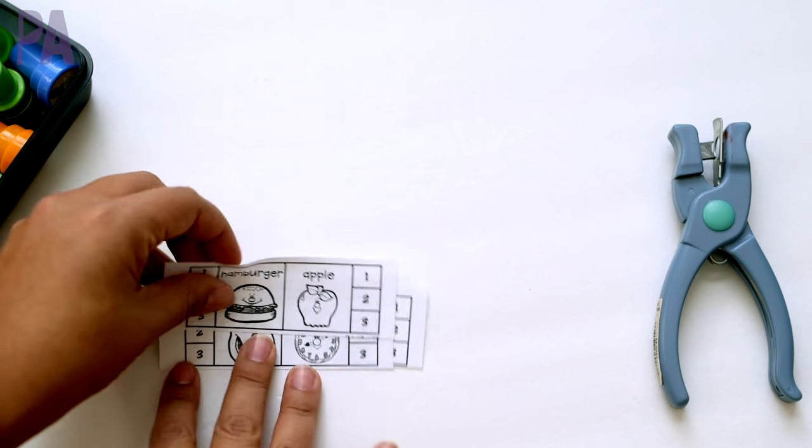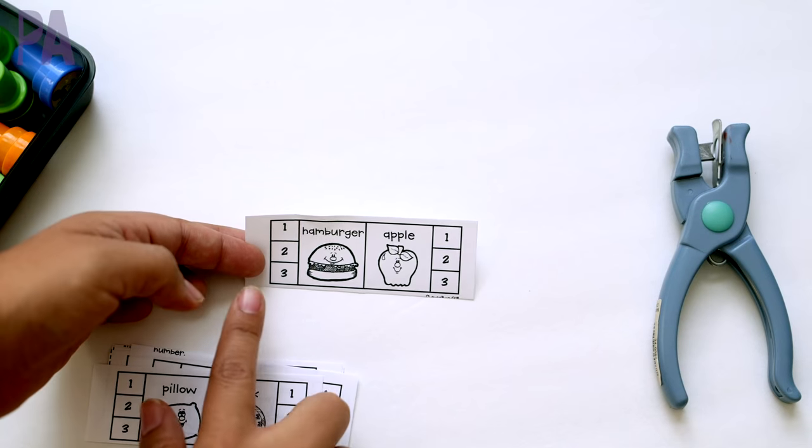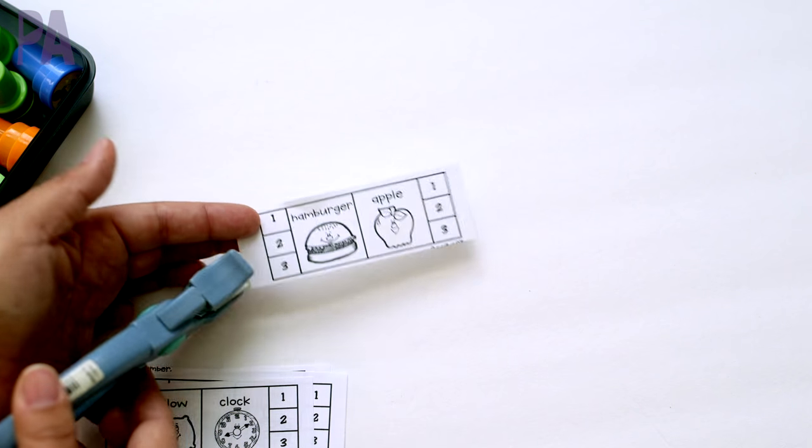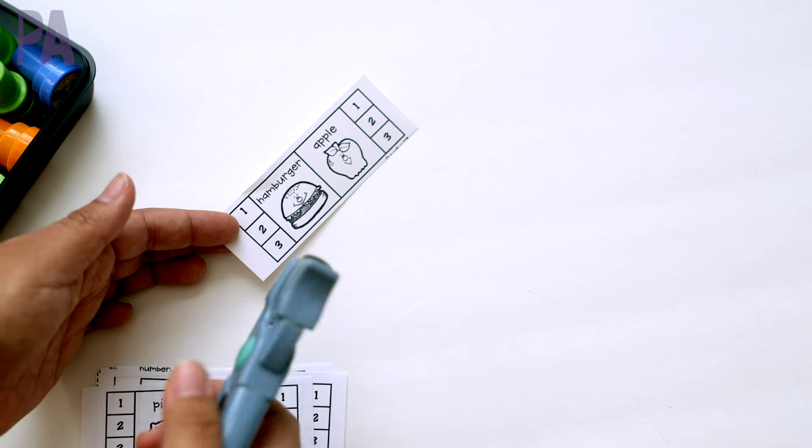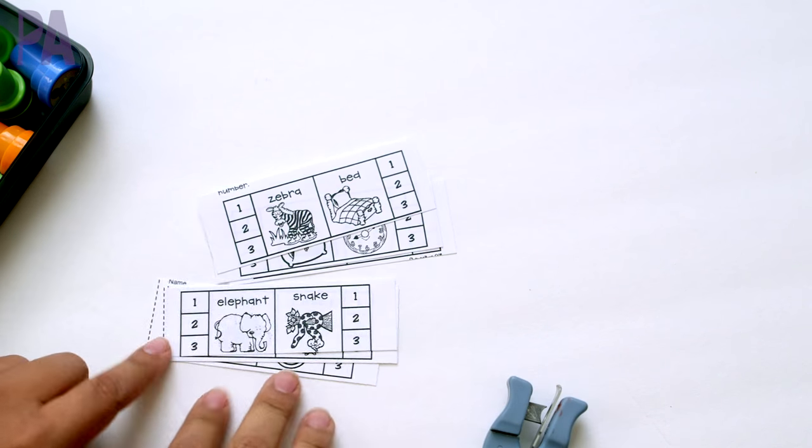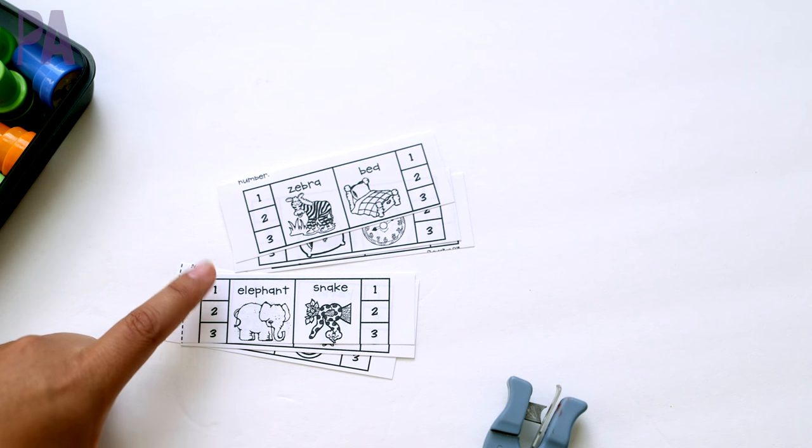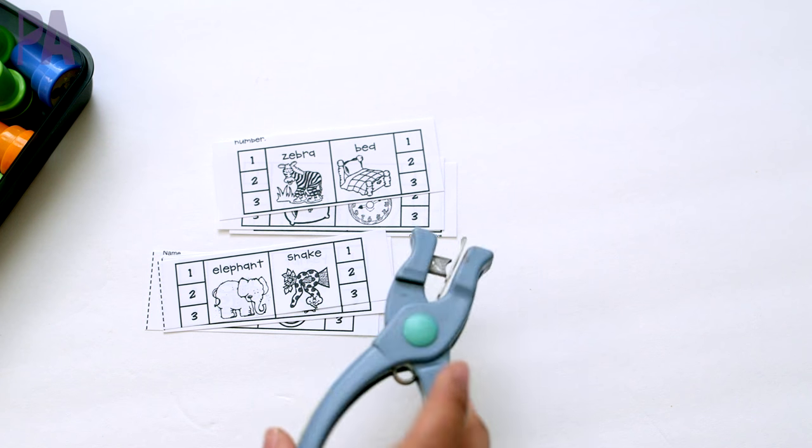But these are cards that I printed out and it has numbers here on the side that correspond, and you have to pick which one is the correct number. So hamburger has three syllables and you would just punch out the three on the card. So great coordination with the hands, making sure you punch out the right one. Another thing you can do if you want to reuse them, laminate these and then use clothes pins and put the clothes pins on the correct number instead. But I kind of thought the hand punch was a little bit fun twist on this one, or you can use the stamps to stamp in the correct spots.